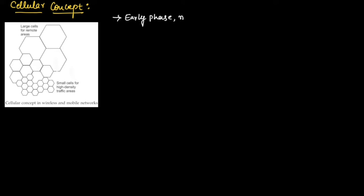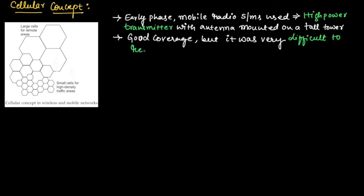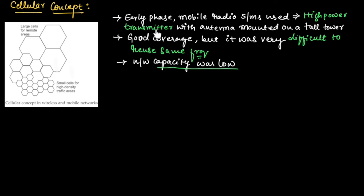Now let us understand the cellular concept. In the early phase, mobile radio systems normally used a high power transmitter with an antenna mounted on a tall tower. This approach gave good coverage, but it was very difficult to reuse the same frequency, hence network capacity was low. Frequency reuse is a very important concept in cellular communication, which we will understand in future topics.